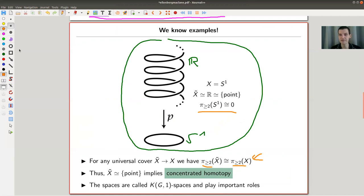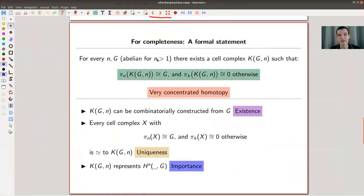In particular, this implies whenever you have a space whose universal cover is a point, then we have concentrated homotopy. For example, for my S^1 here that's just concentrated homotopy in the fundamental group itself. All other stuff is zero and those spaces have a specific name. They're called K(G,1) spaces. G here is, in this case, the π_1 of your space.